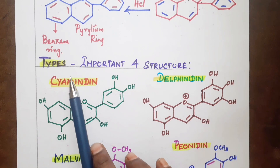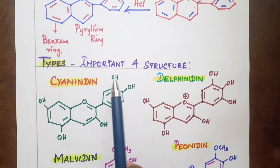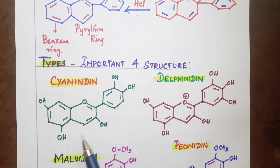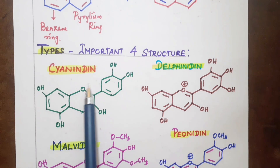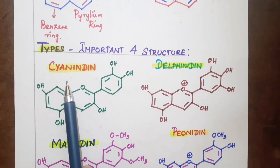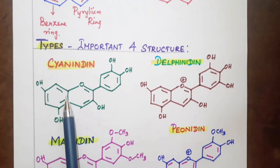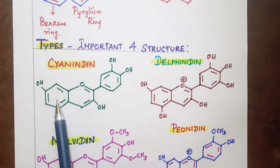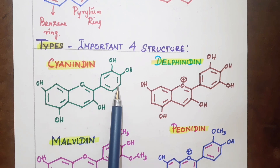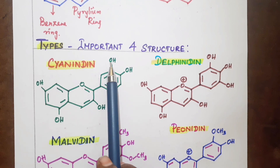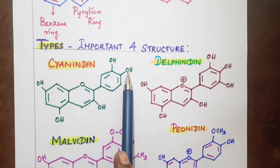There are 6 types of anthocyanin, with 4 important structures. One structure was asked in the 2009 exam. The first important type is Cyanidine. Its structure consists of a benzene ring, a pyrylium ring, and another benzene ring, with OH and OH groups present.